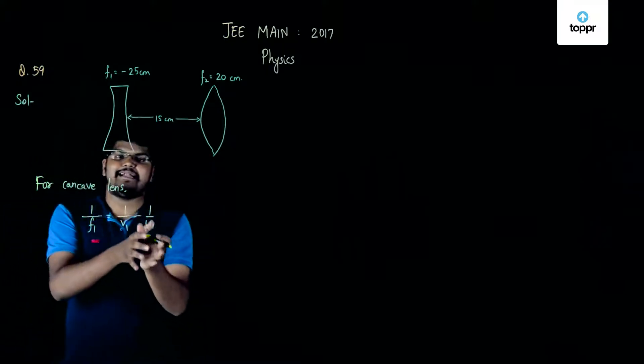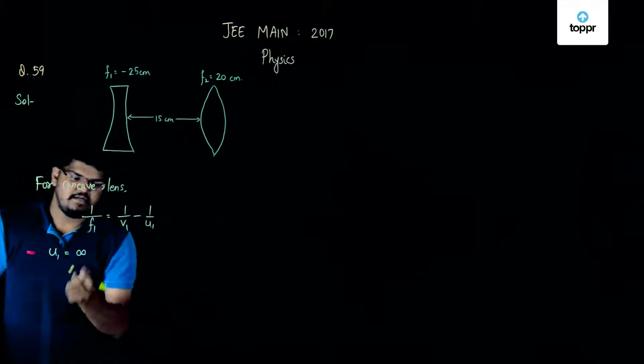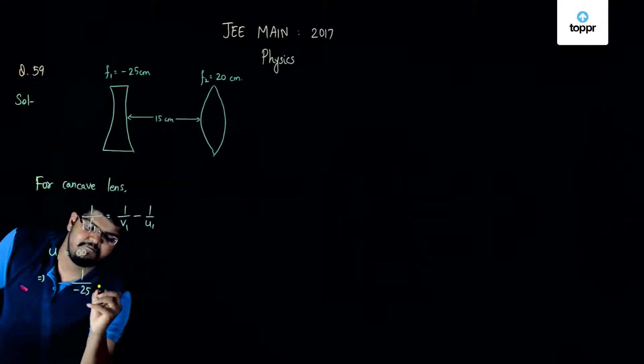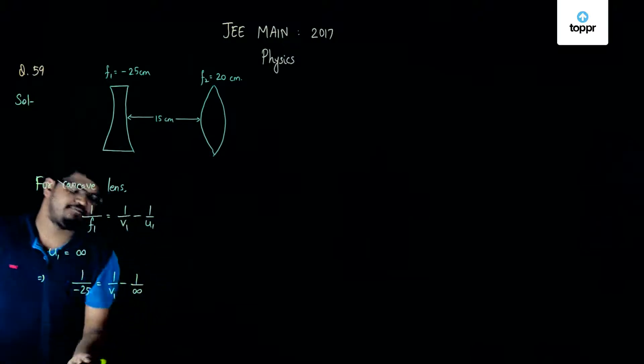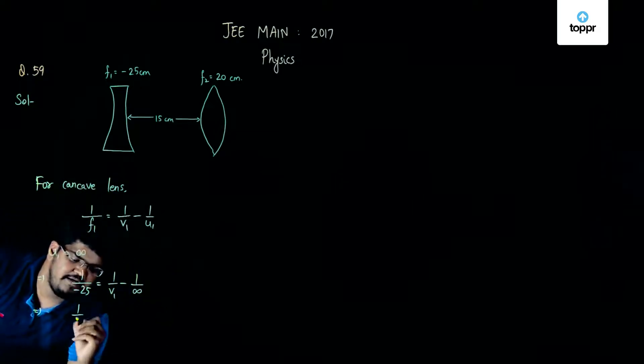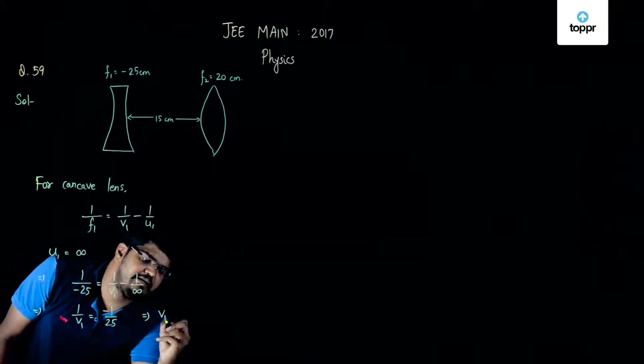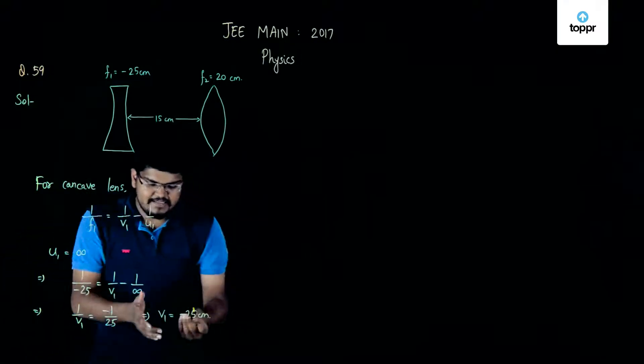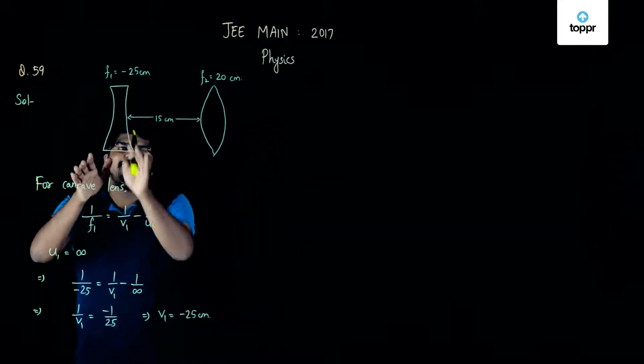We already know that the ray of light is coming from infinity, so this means u1 is equal to infinity and we can say that we have 1 upon minus 25 is equal to 1 upon v1 minus 1 upon infinity. Now, this 1 upon infinity will be reduced to 0 and we will have 1 upon v1 is equal to minus 1 upon 25, this implies that v1 is equal to minus 25 centimeter. So basically the image will be formed at 25 centimeter here from the diverging lens.